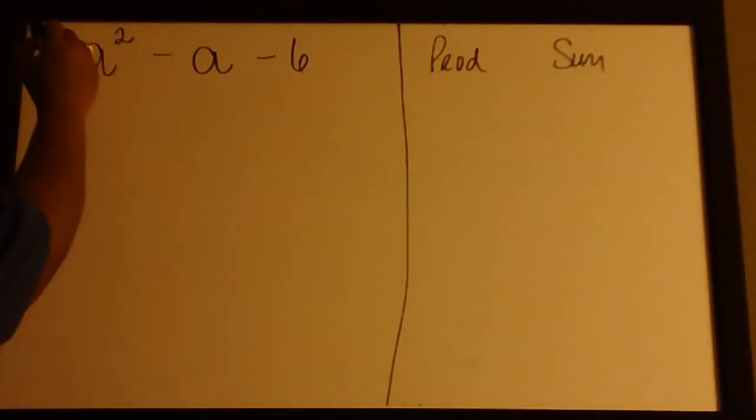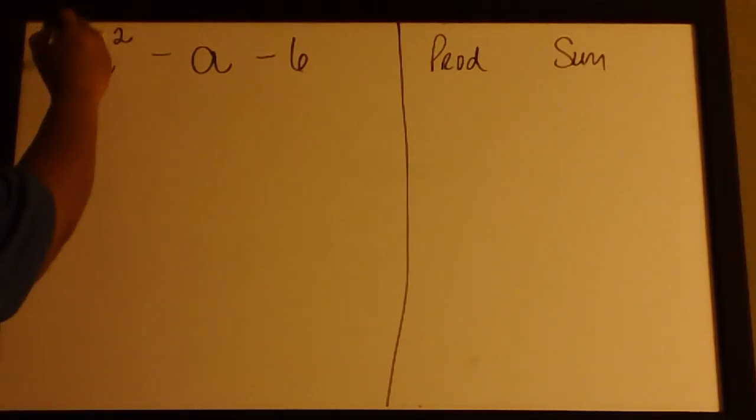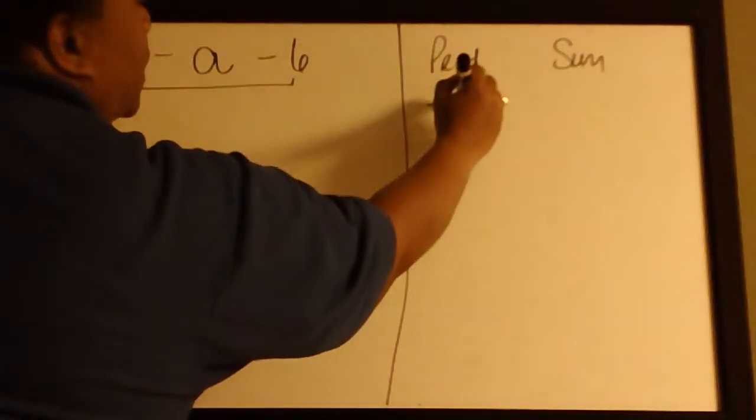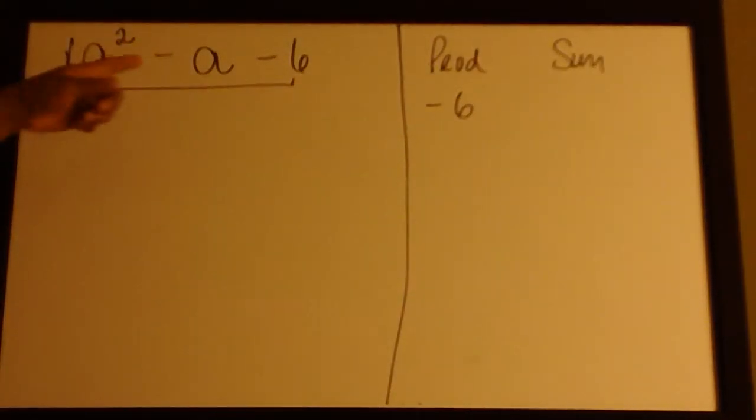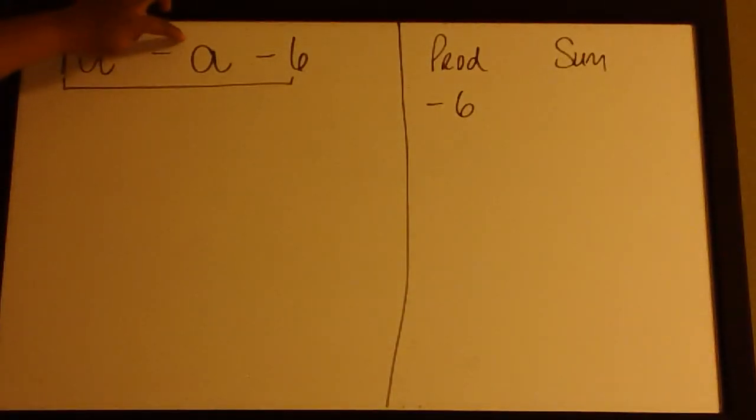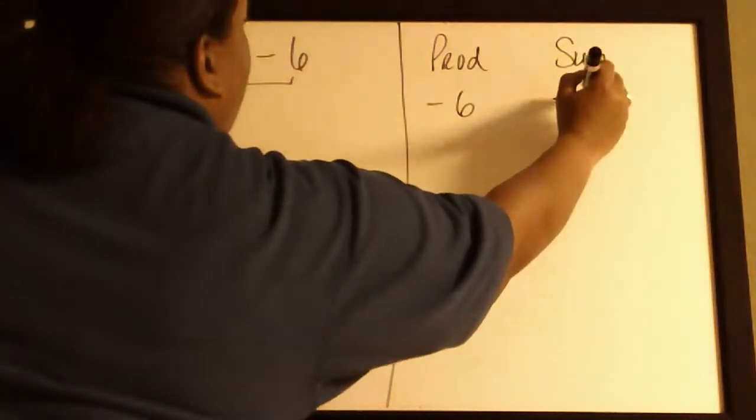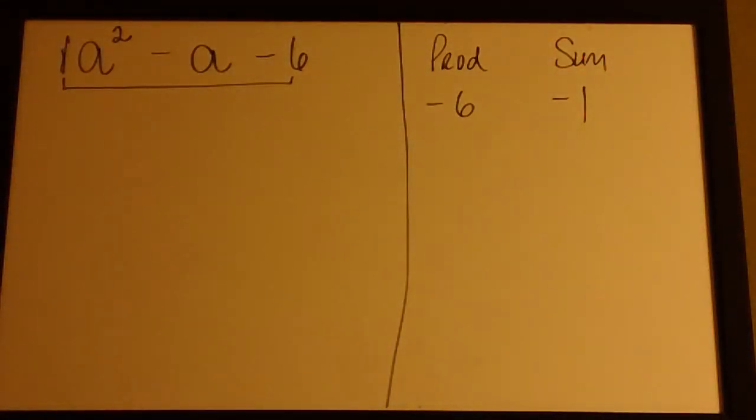We need a product that comes from 1 times -6, which is -6, and the middle term is understood to be -1a, so we need a sum of -1.